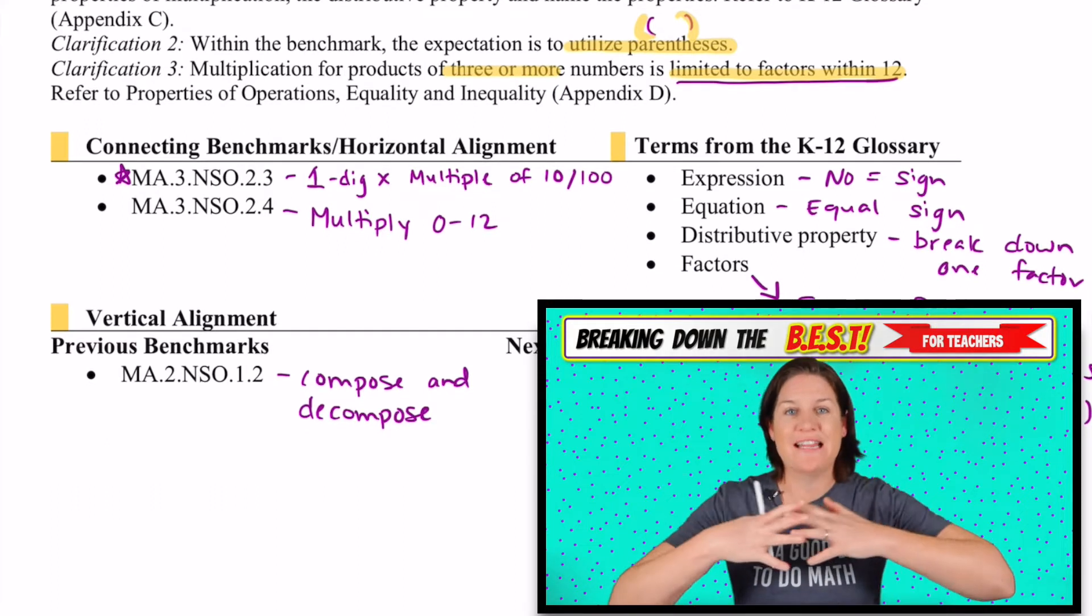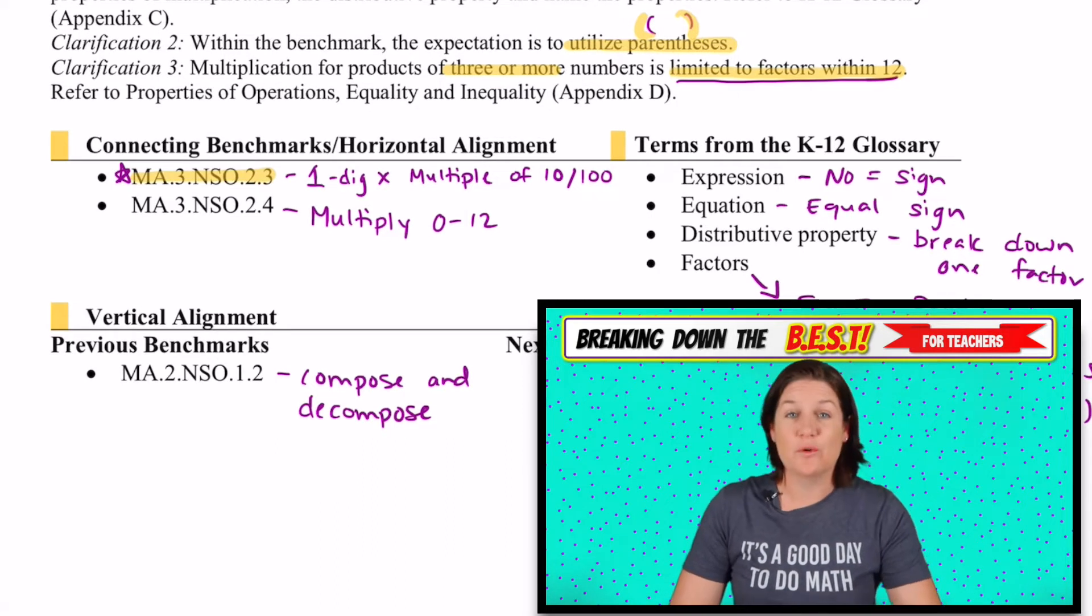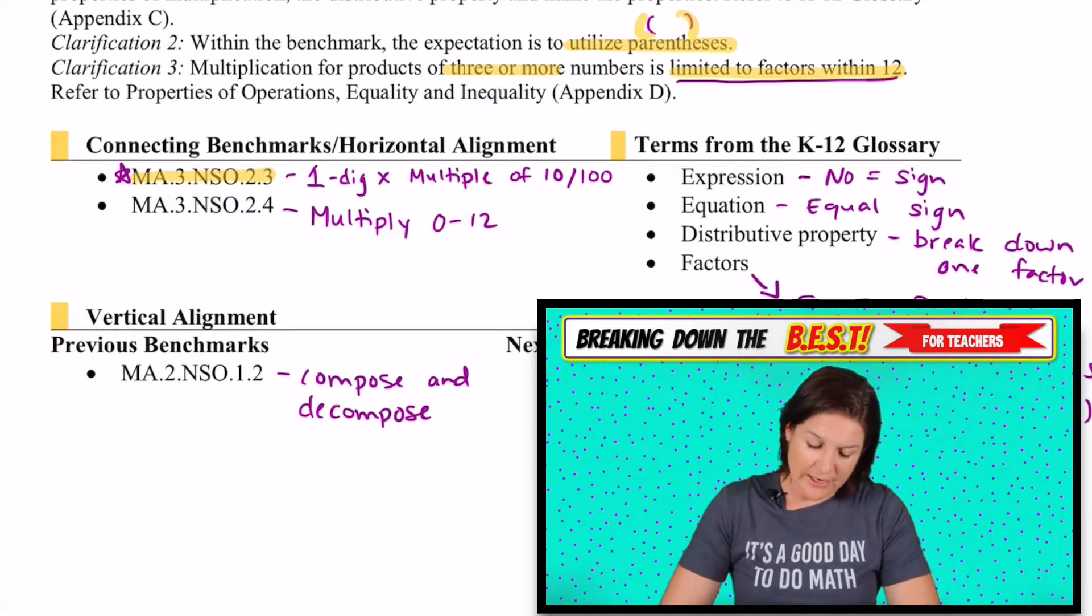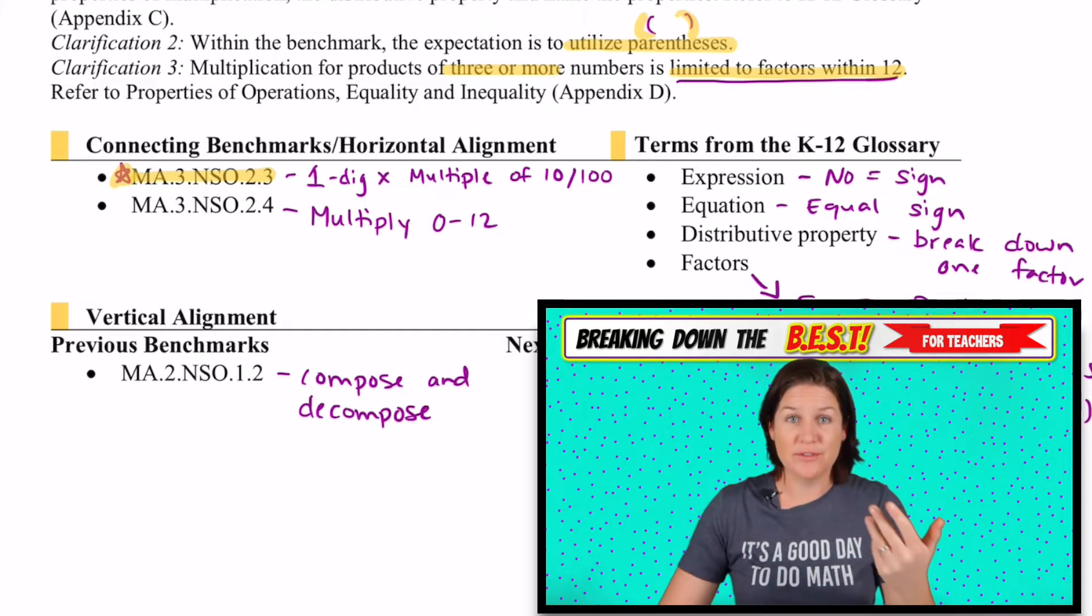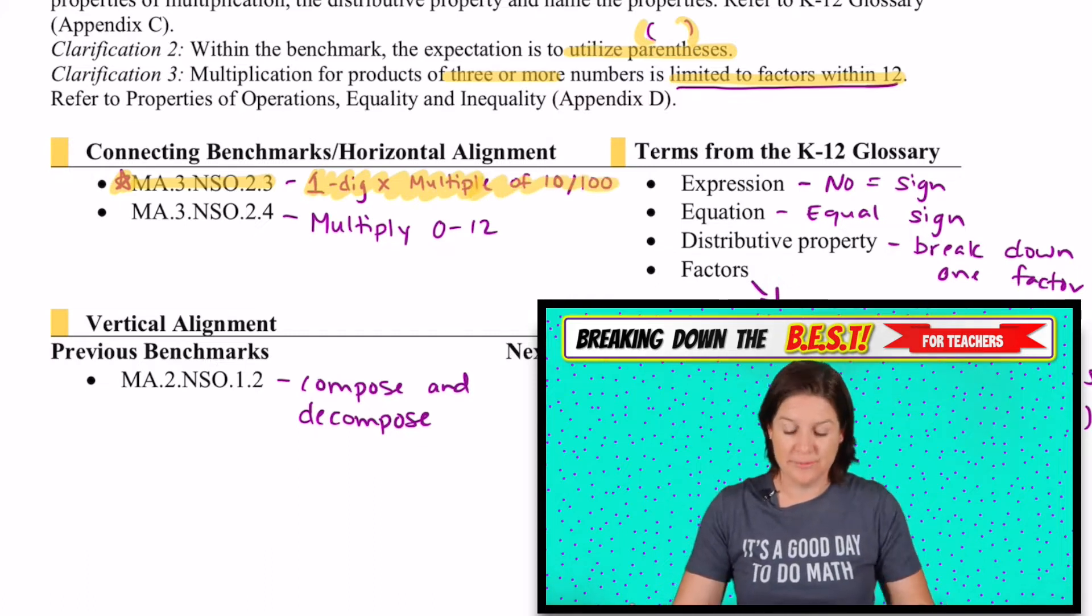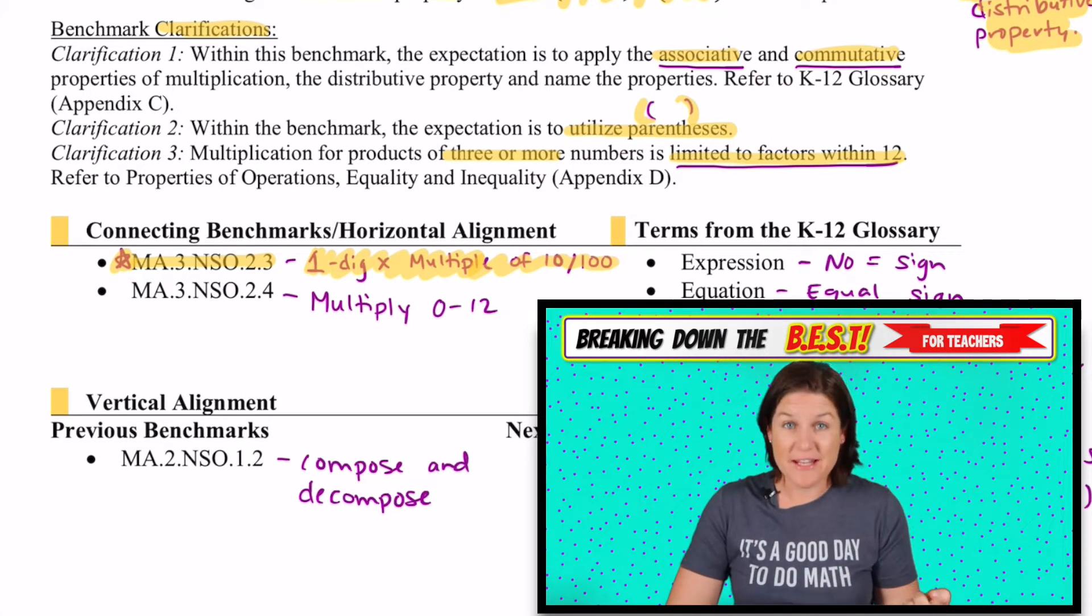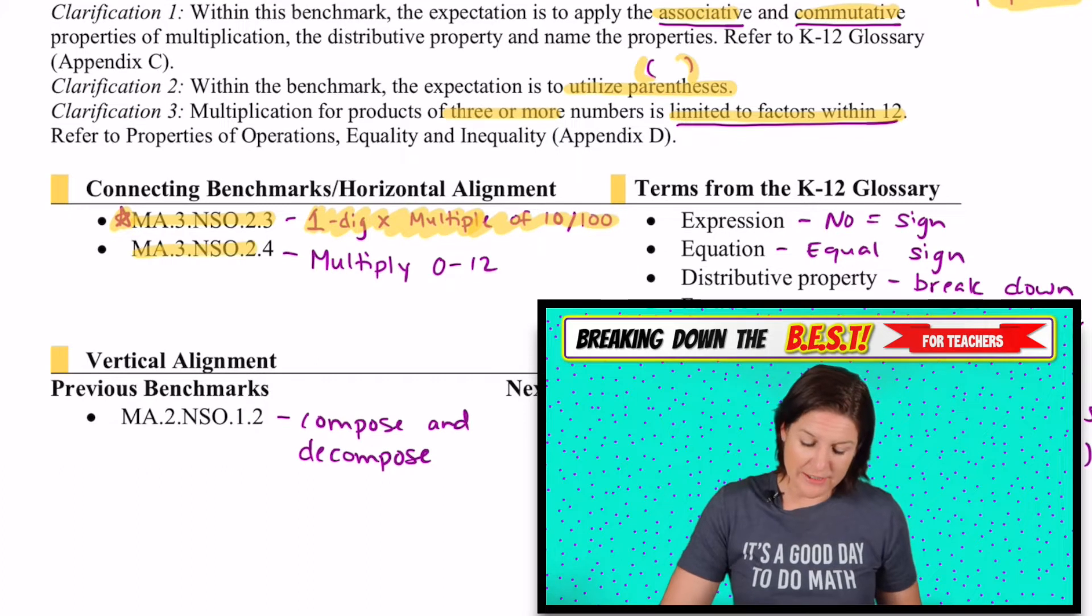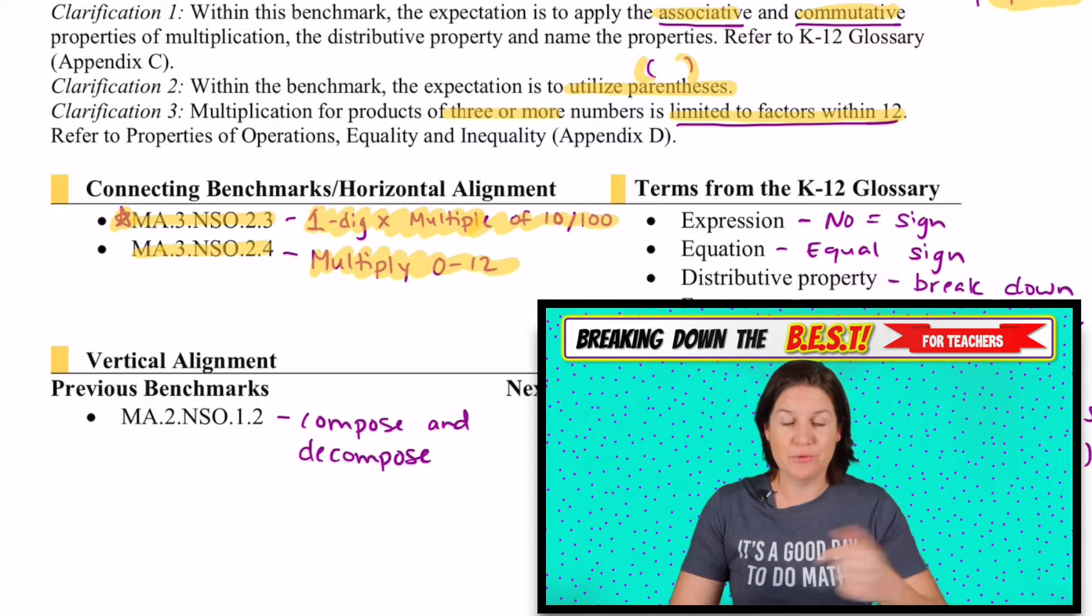So what other benchmarks align with what we're going over? Well, we have MA.3.NSO.2.3 and I started this one because this one leads us into the distributive property. We need the knowledge of the standard because the standard for 2.3 is where we have one digit times a multiple of 10 or 100. So when we're multiplying 4 times 70, that's in NSO.2.3. And then MA.3.NSO.2.4 is where we are multiplying 0 through 12.